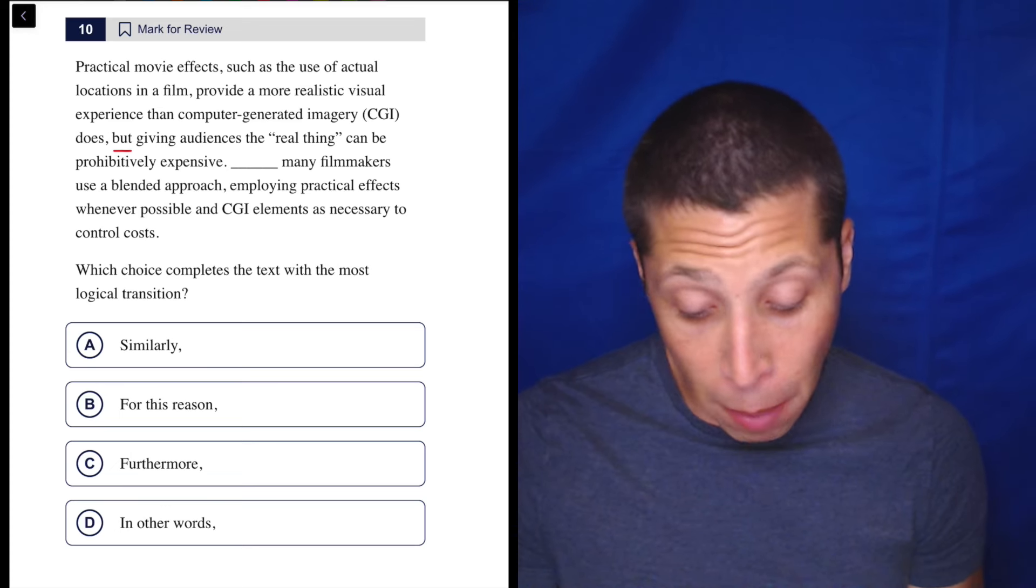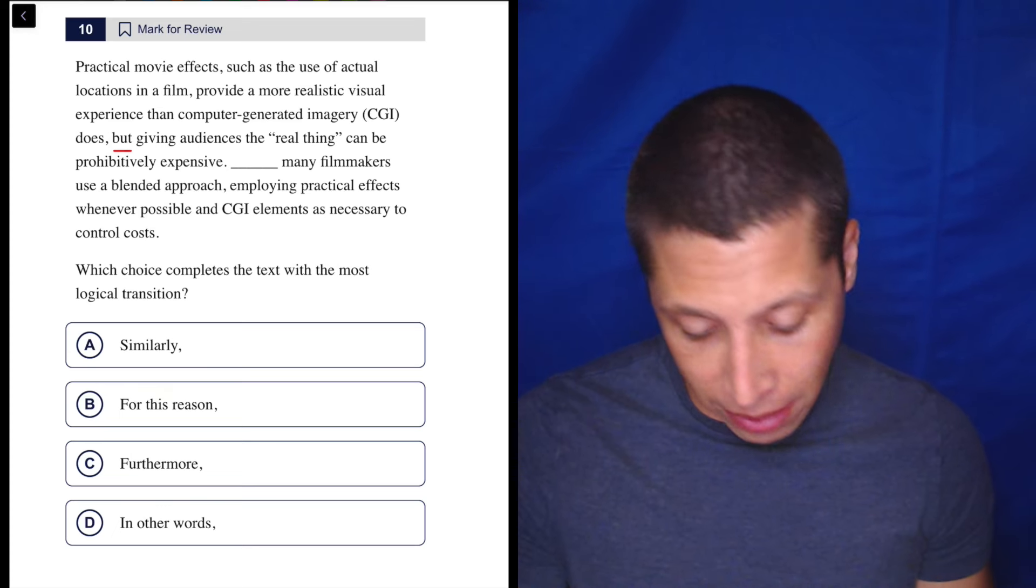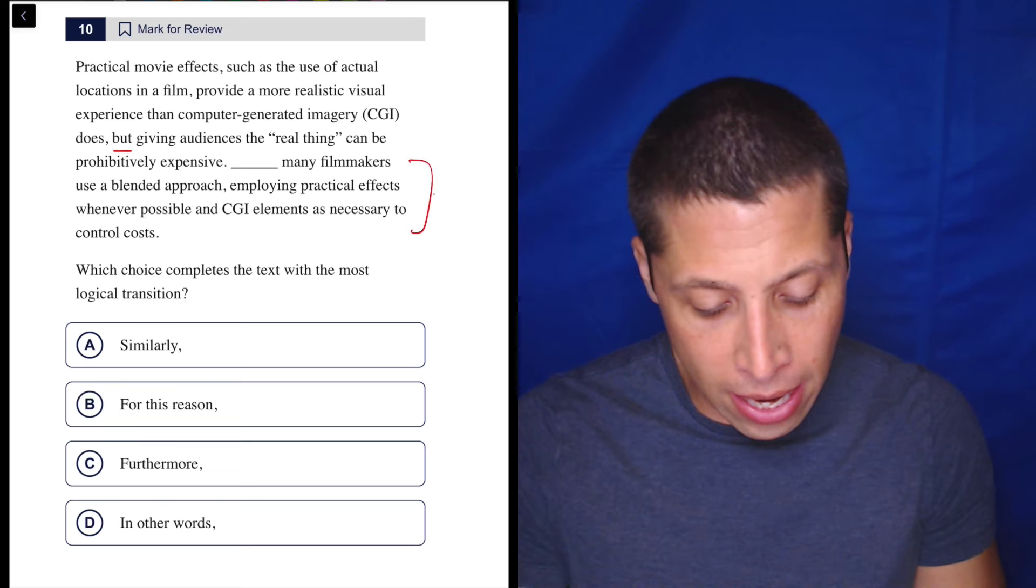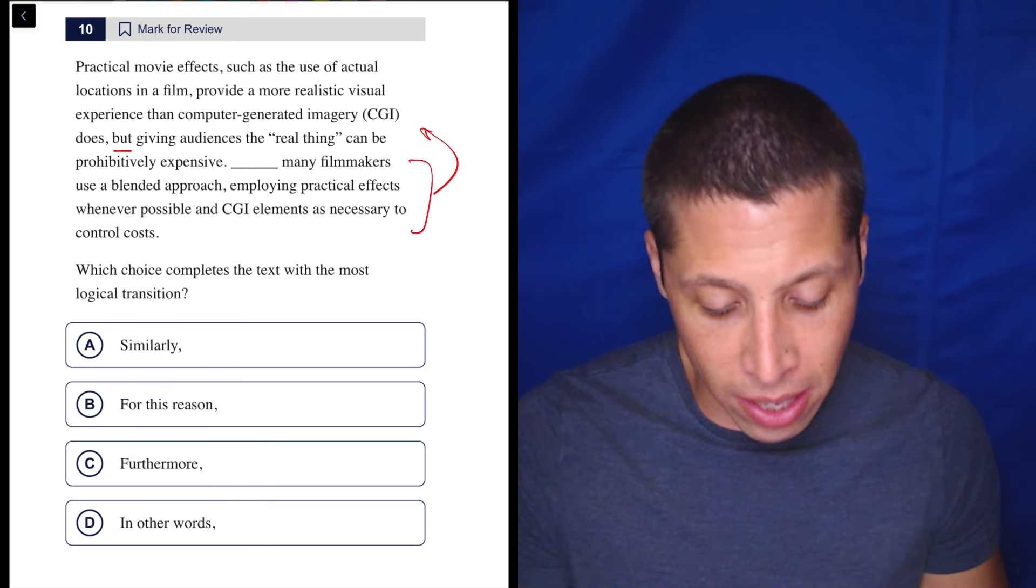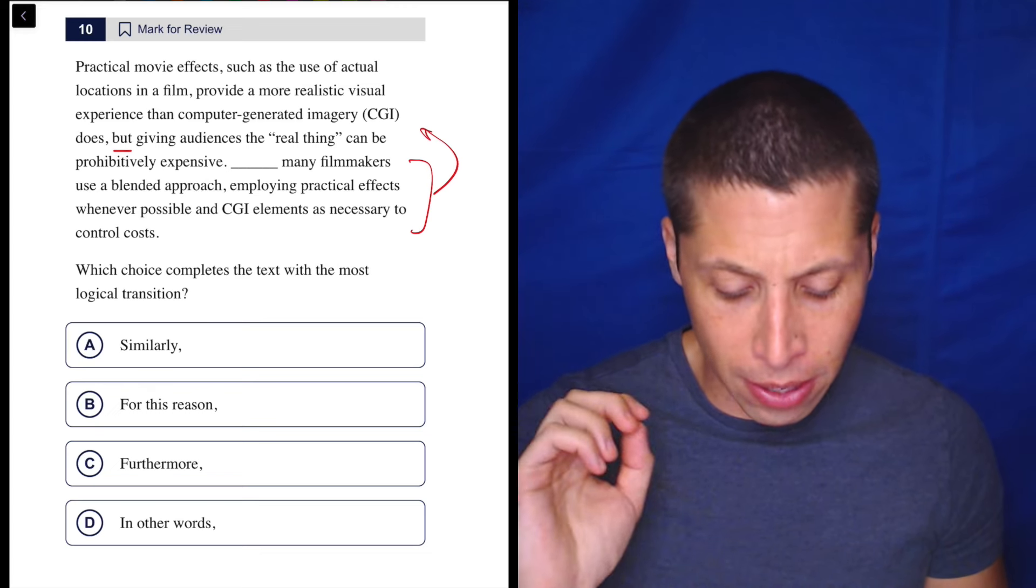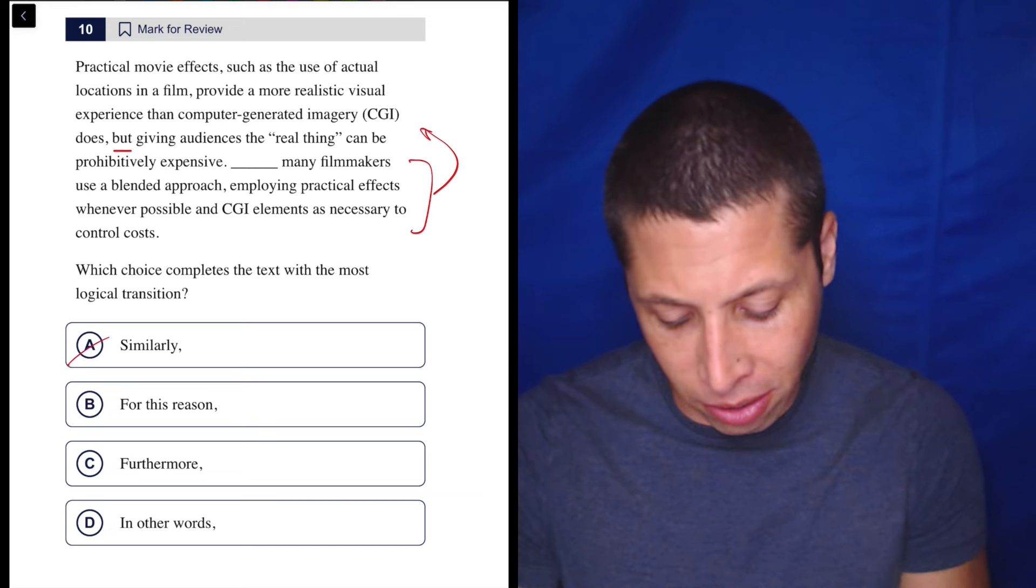So there is a but, right? It's already there. So do we need another one? I don't think so. Similarly has a very straightforward meaning. Is this sentence kind of a similar situation as this? I don't think so. They're saying the realistic thing is good. They're saying it's expensive. So it's not like similarly something else is expensive. That just doesn't fit.